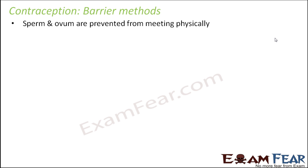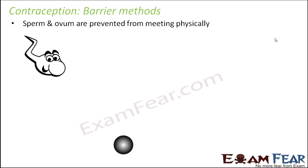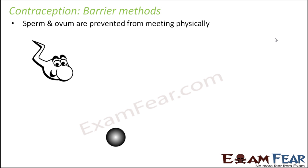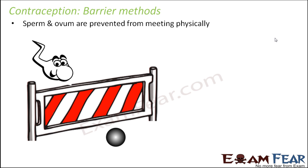In barrier methods, the sperm and the ovum are prevented from meeting physically. For fusion to take place between sperm and ovum, they actually have to meet each other physically. Physical meeting is very important, and that is why we talk about gamete transfer — how the gamete gets transferred from the male body to the female body. In this method, we will somehow stop them from meeting each other. So if they do not meet, there will be no fusion, no fusion means no pregnancy. That is how it acts as a contraceptive method. Even if the sperm and ovum are trying to come towards each other, there will be a barrier in between, and due to the presence of this barrier, they will not be able to fuse.